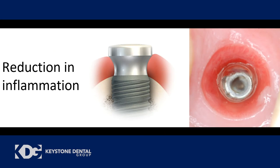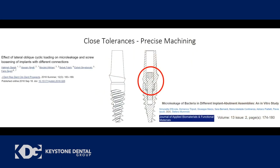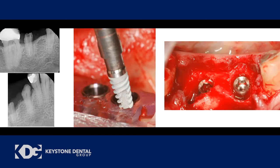The third factor is close tolerances and precise machining. We know from the literature that preventing micro-movement at the implant-to-abutment connection prevents bacterial micro-leakage, which would otherwise cause inflammation through bacterial endotoxins. With the Paltop system, very precise tolerances eliminate micro-movement at that connection.